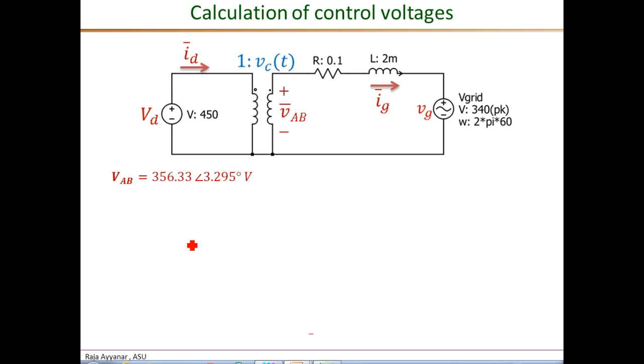Now that we have the phasor VAB calculated, it's easy to get the control voltage VC as a phasor. VC is simply VAB divided by the DC link voltage magnitude 450. Therefore, VC as a phasor is 356.33 divided by 450, which is 0.792, and has the same angle as that of VAB phasor because VD is simply a constant value.